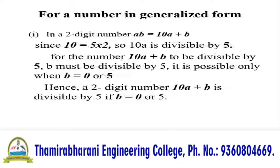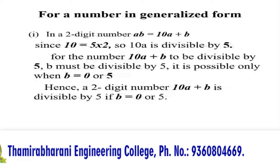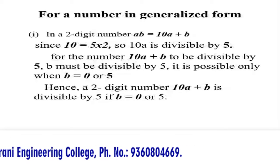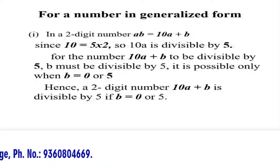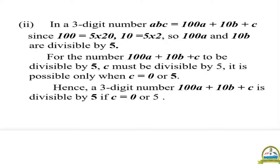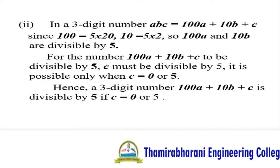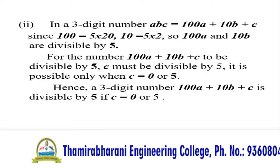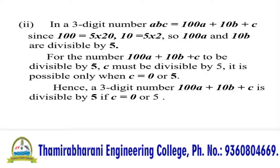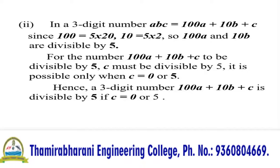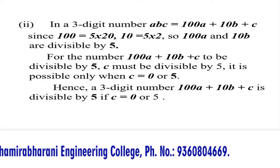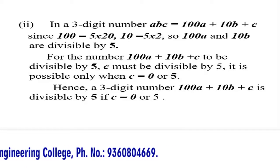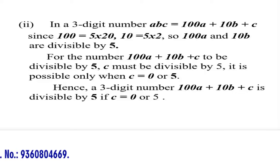For a three-digit number ABC equals 100A plus 10B plus C. Since 100 equals 5 times 20 and 10 equals 5 times 2, so 100A and 10B are divisible by 5. For the number 100A plus 10B plus C to be divisible by 5, C must be divisible by 5, which is possible only when C equals 0 or 5.